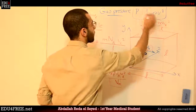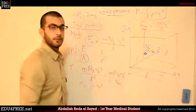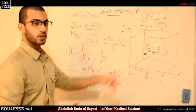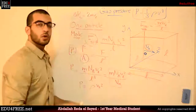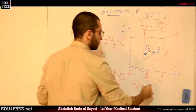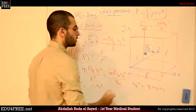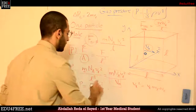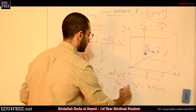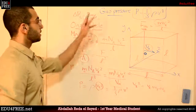So where did the one third come from? We have to remember that in the beginning we worked on just one vector, Vx. But because the motion of the particle is the same in all directions, we take the average. So Vx squared can be expressed as Vx plus Vy plus Vz, and we divide by 3. So instead of writing it that way, the total pressure equals one third multiplied by rho multiplied by V squared, and this is the gas pressure law.